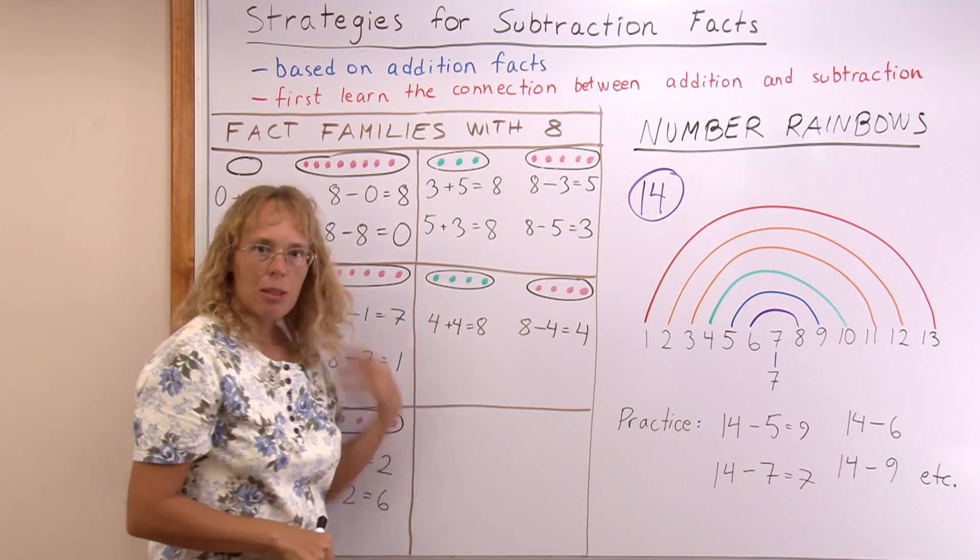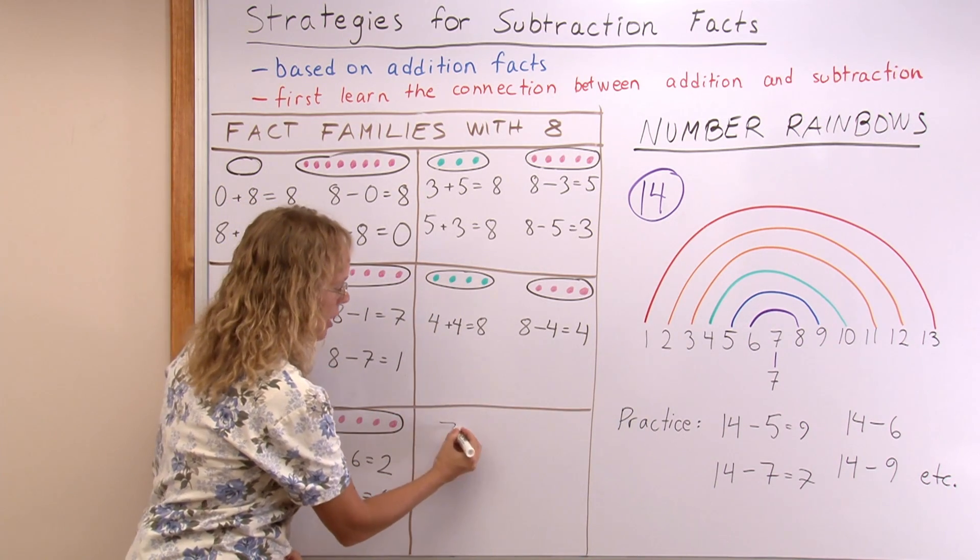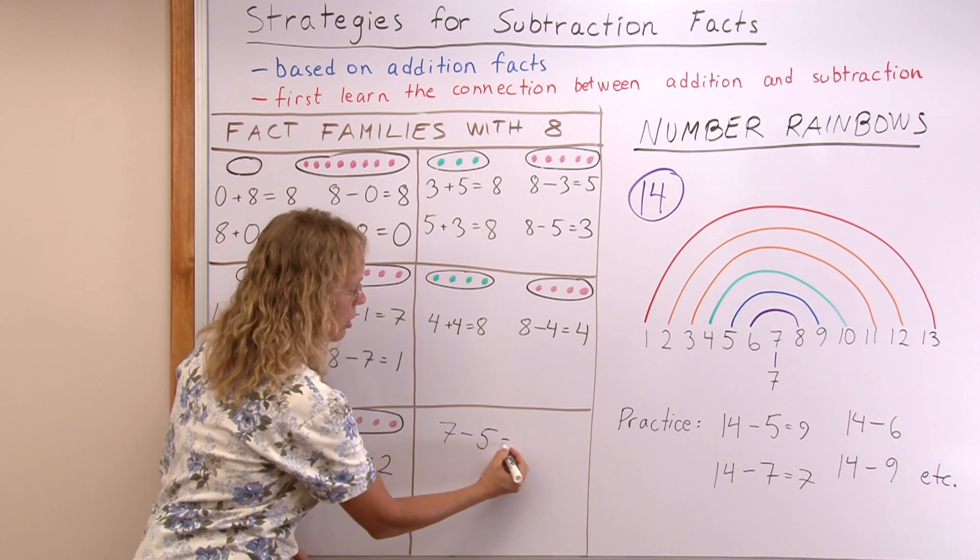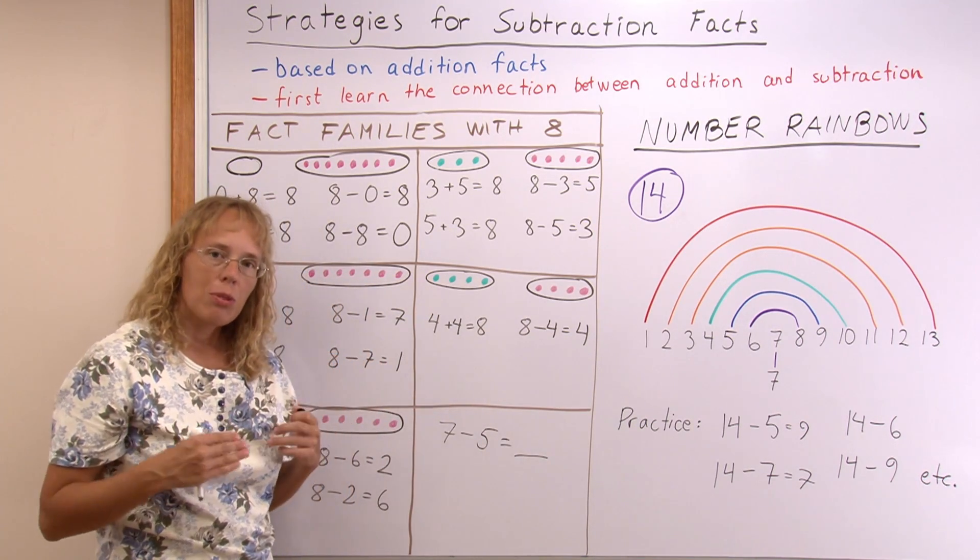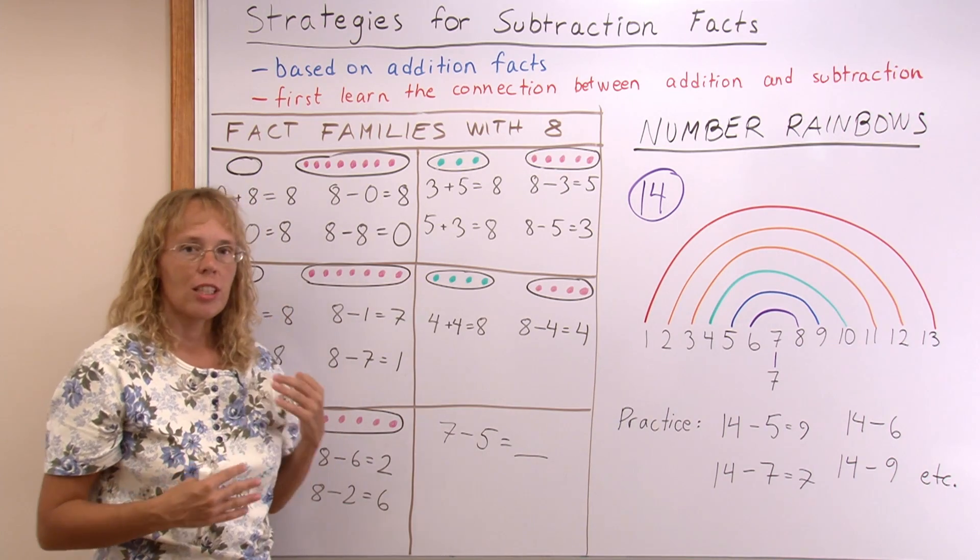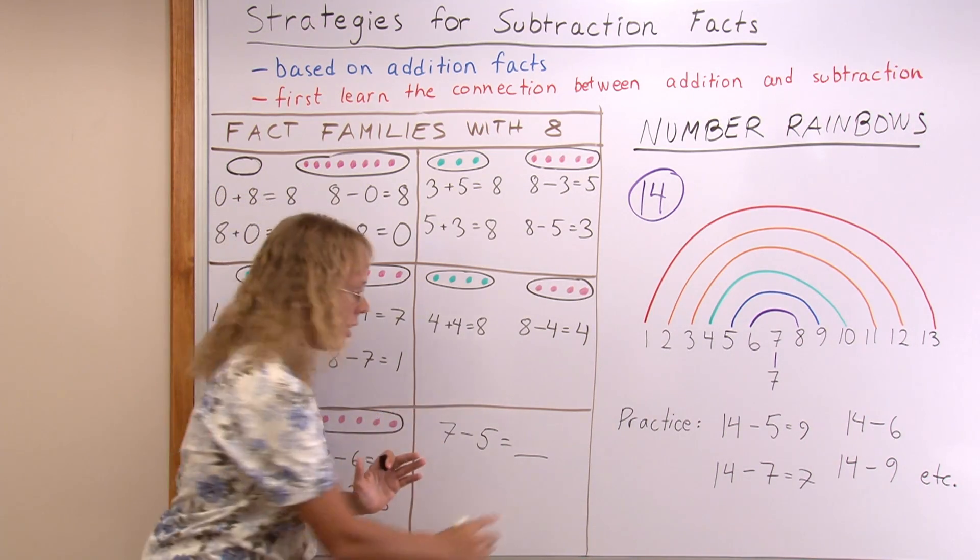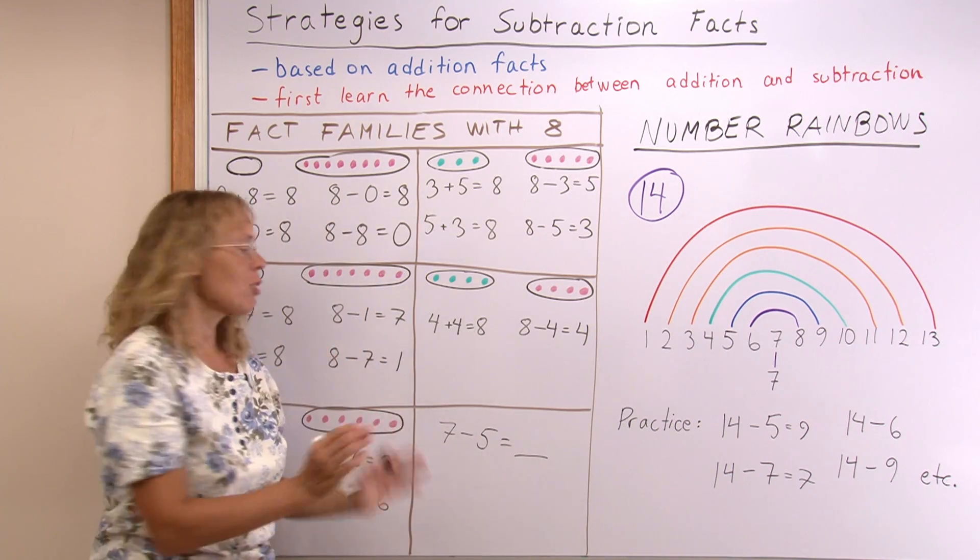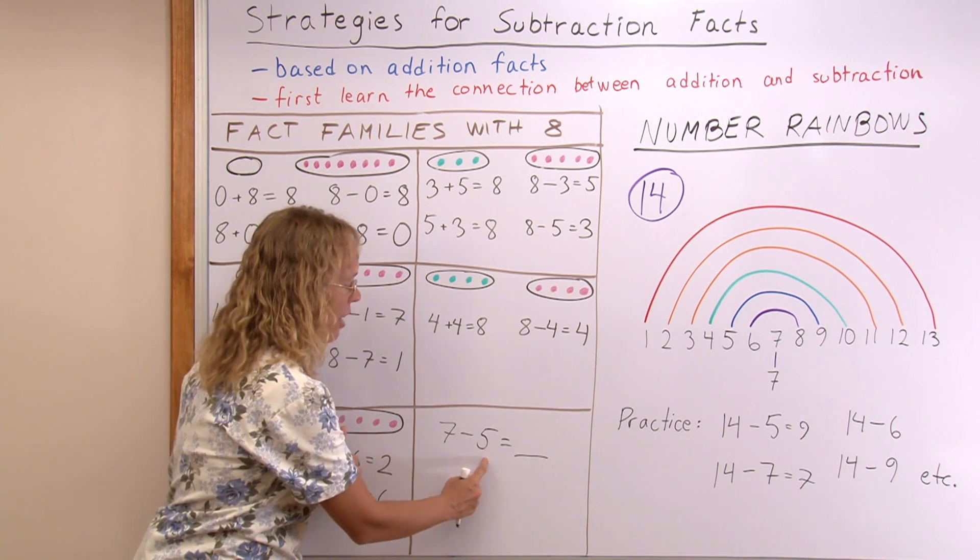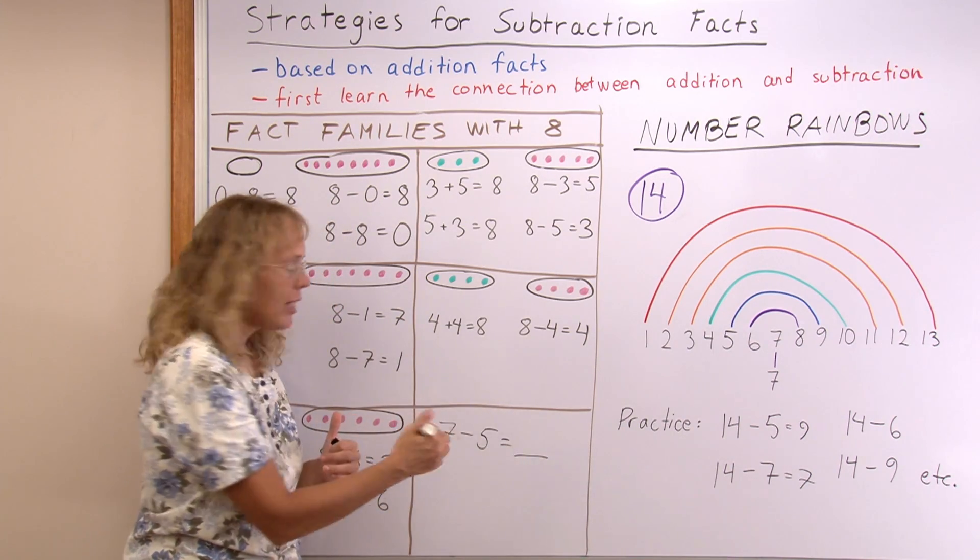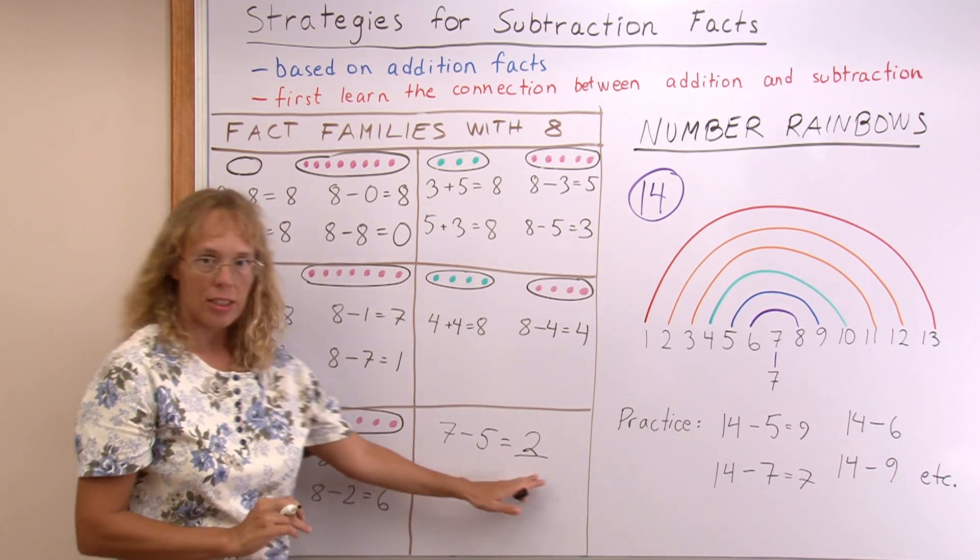And then, once they have been working with the fact families, and you present to them some random subtraction, such as this, then the student will think through addition and through fact families that, I had a fact family with 2, 5, and 7, so therefore the answer is 2. Or they can think through addition—5 plus something makes 7, right? So 5 and 2, 5 and 2 makes 7, so the answer is 2.